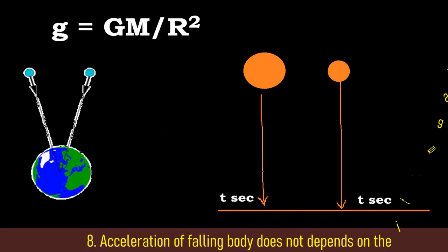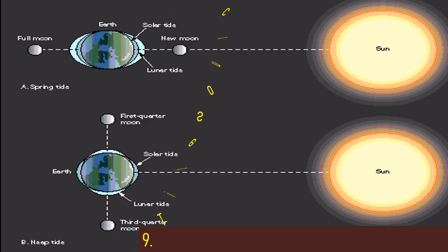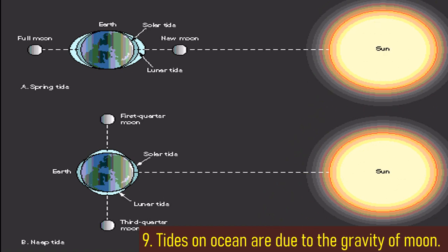Fact number eight: acceleration of falling body does not depend on its mass. Both heavier and lighter body should fall with same speed during free fall. Fact number nine: tides on the ocean are due to the gravity of moon, so they are higher during the full moon.